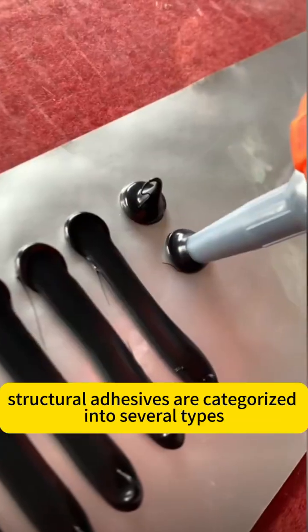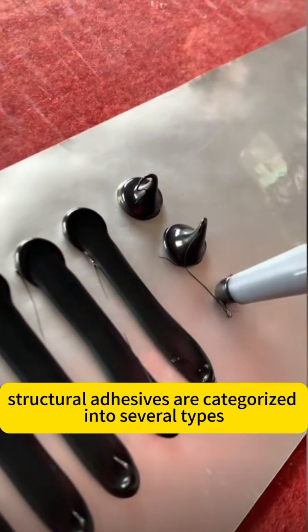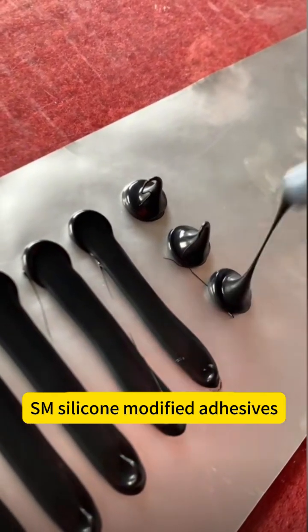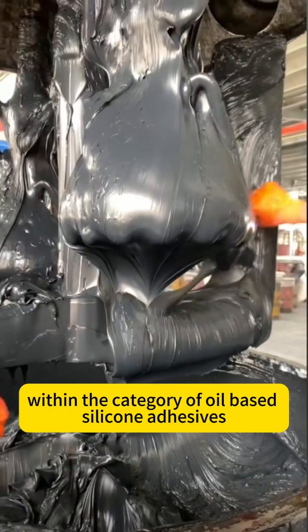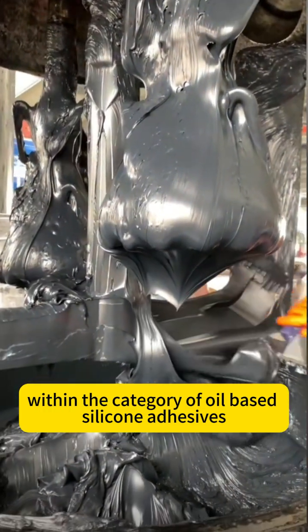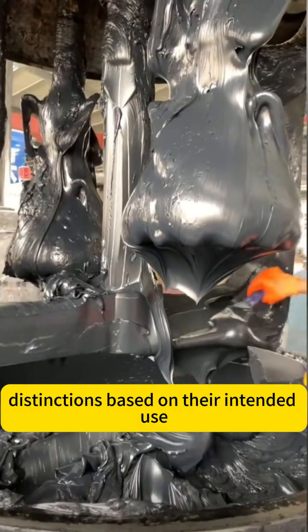In reality, structural adhesives are categorized into several types: SM (silicone modified adhesives), water-based adhesives, and oil-based silicone adhesives. Within the category of oil-based silicone adhesives, there are further distinctions based on their intended use.